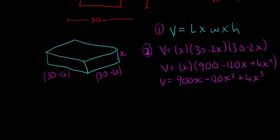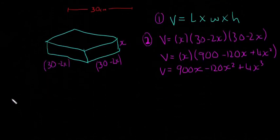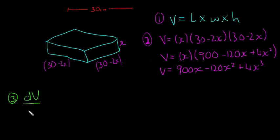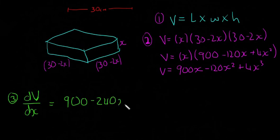Now step three, if you remember, is to differentiate it. So I'm going to do that down here. I'm going to do a little three. So dV/dx is going to be equal to 900 minus 240X plus 12X squared.